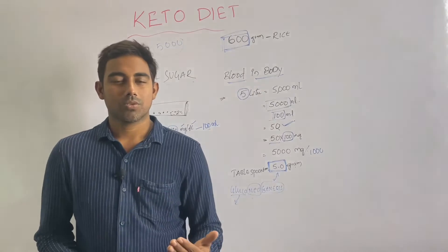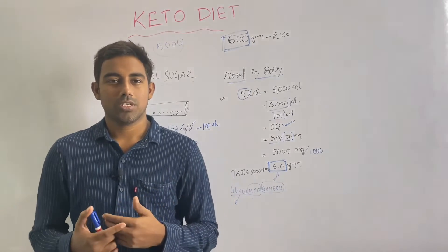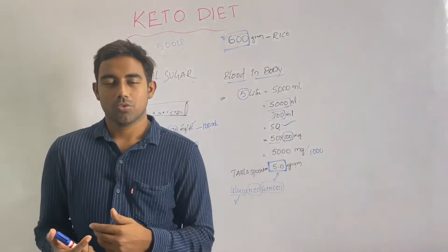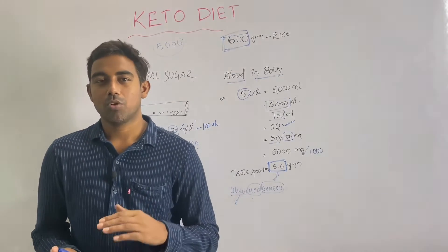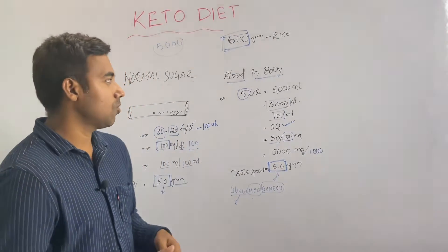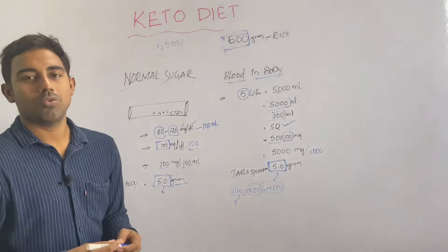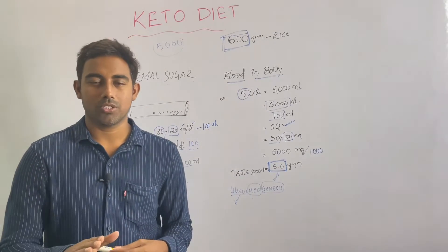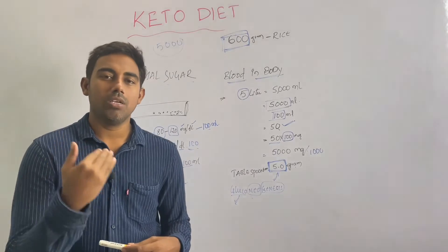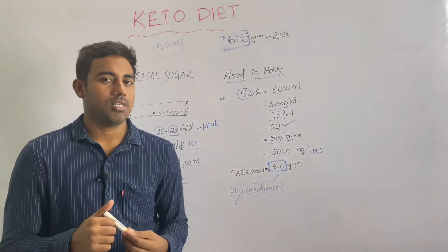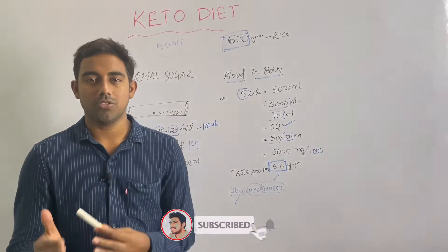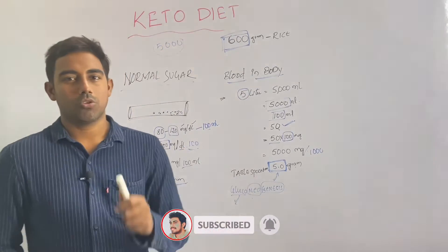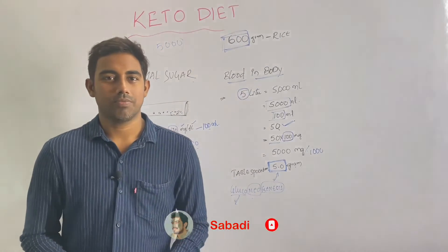Body and human physiology all work together. If you eat, glucose is stored in your liver. You can check your sugar level based on what is stored in the liver.